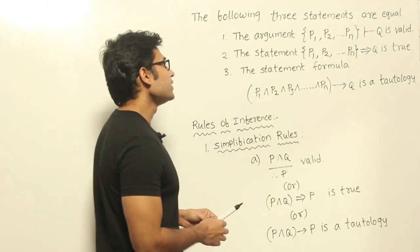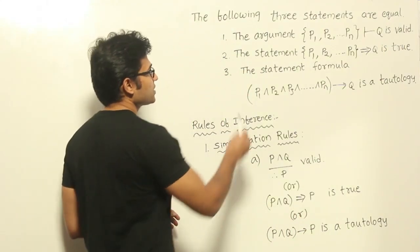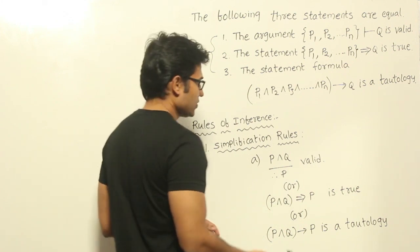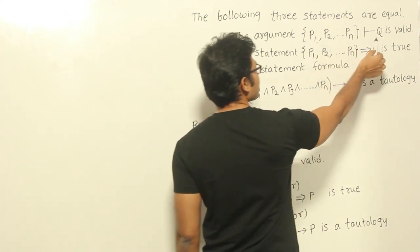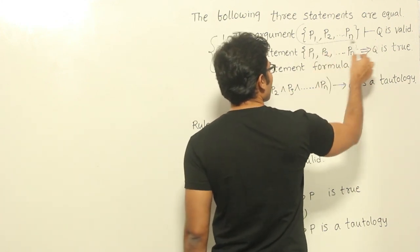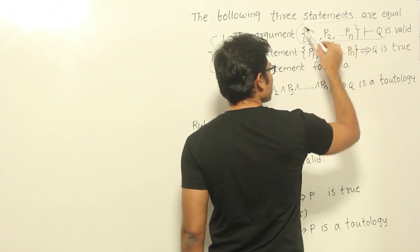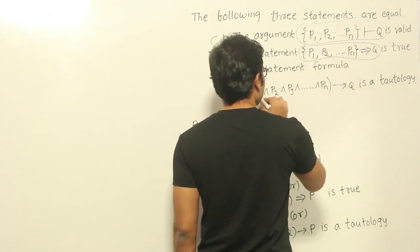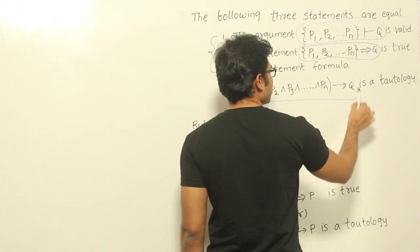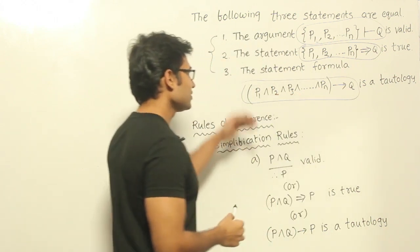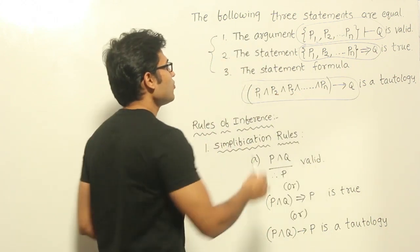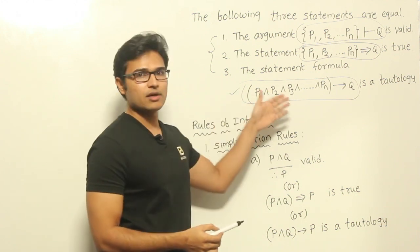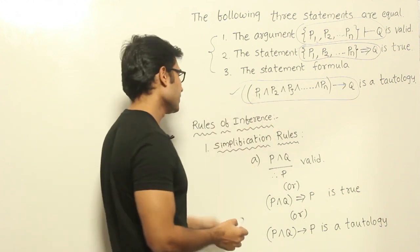Whenever an argument is valid, we can represent it using any of these three forms. Whenever you say that this argument is valid, one other way of writing the same thing is by using this representation, or by using this representation. All three are the same, and we mostly use this kind of representation in order to say that an argument is valid.